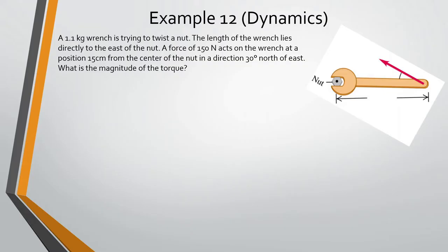Alright, so let's look at this first problem. A 1.1 kg wrench is trying to twist the nut. The length of the wrench lies directly to the east of the nut, so it's kind of perpendicular to it. A force of 150 N acts on the wrench at a position 15 cm — so 0.15 m — from the center of the nut.